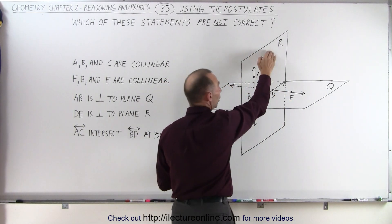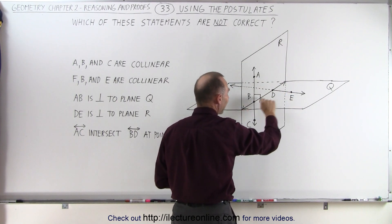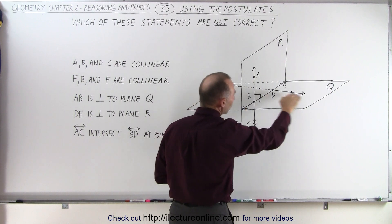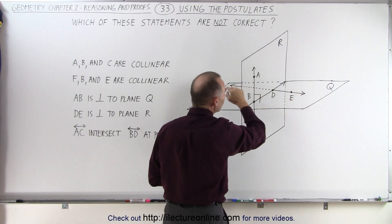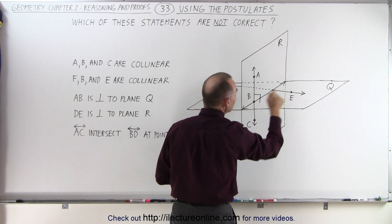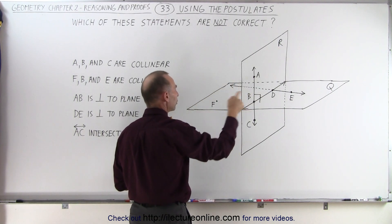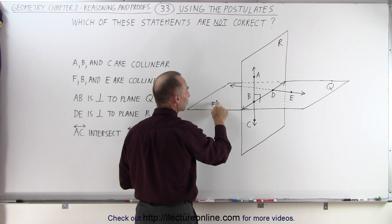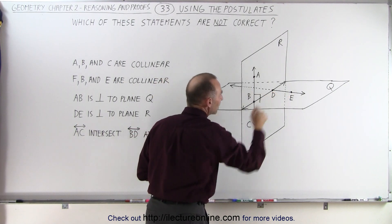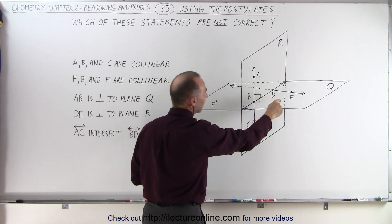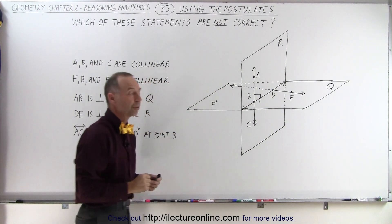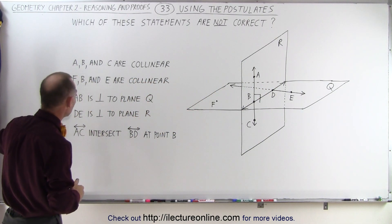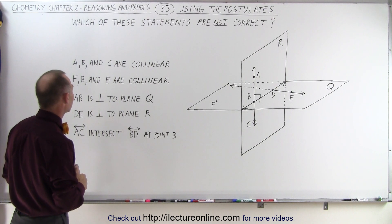Where plane R and plane Q intersect we have a line with the two points B and D. Then we have another line which lies in plane Q which contains points D and E. And we also see that plane Q contains another point, point F, which is not collinear with points D and E because it's not on the line that connects D and E. So let's now go ahead and figure out which of these statements is not a correct statement.